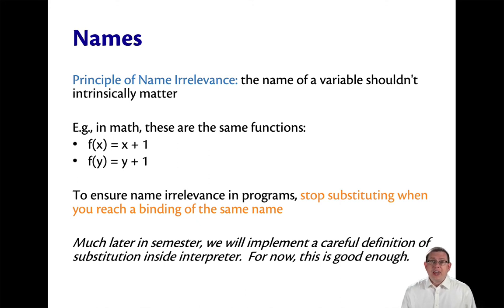To ensure name irrelevance in programs, we actually have to behave very carefully when we're doing substitution. Which is, we need to stop substituting when we reach a binding of the same name. Now, much later in the semester, I'm going to give a very careful definition of what I mean by this, and we'll even implement it as part of a program. But for now, this is a good enough explanation for us to do some examples.